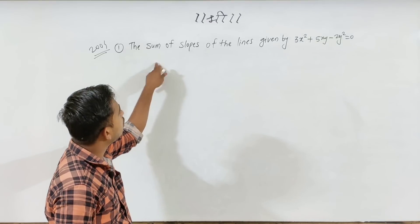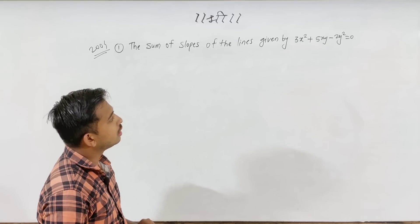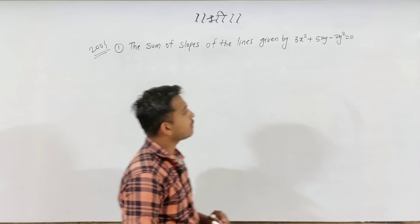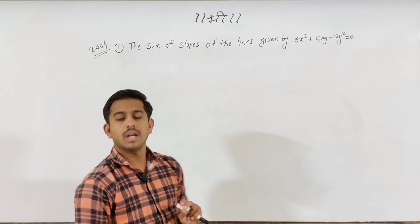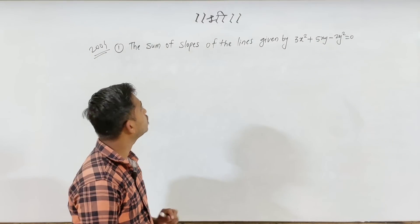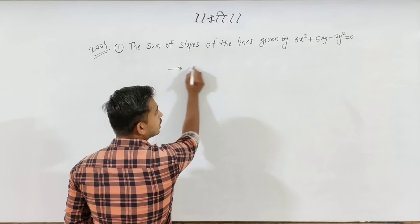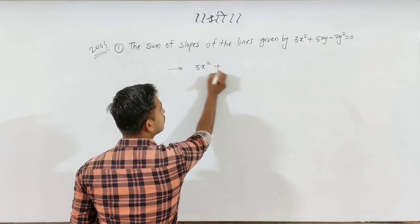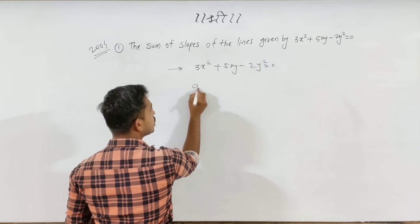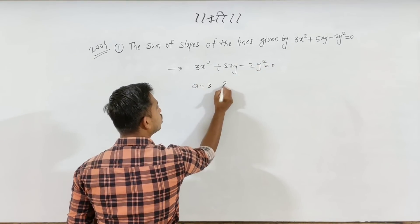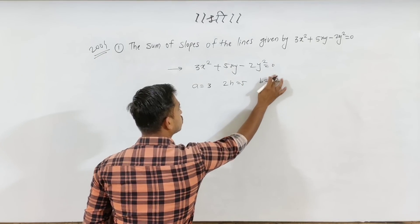The sum of the slopes of the lines given by 3x² + 5xy − 2y² = 0. What is the answer? So we have 3x² + 5xy − 2y² = 0. Here, a value is 3, 2h value is 5, and b value is −2.